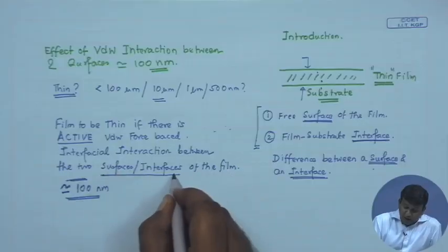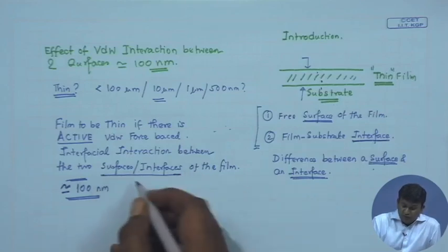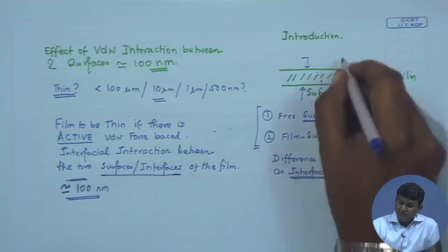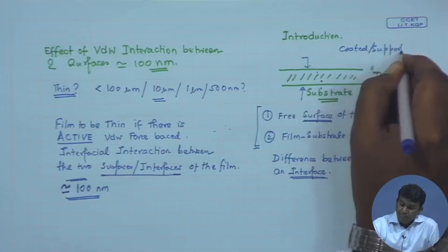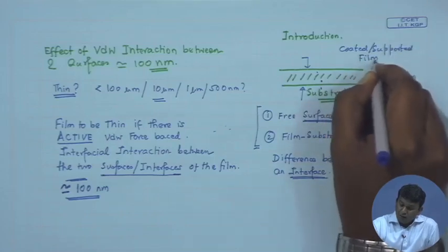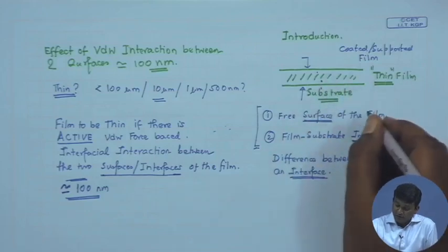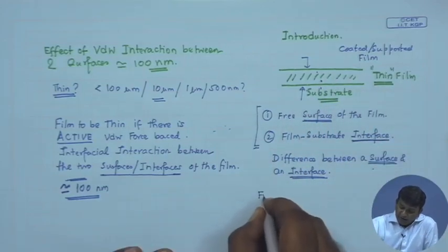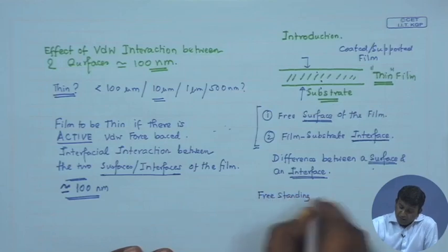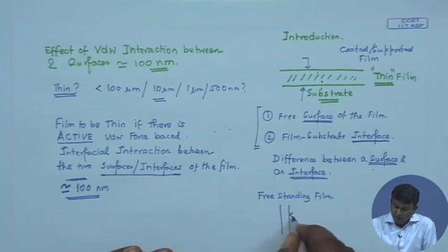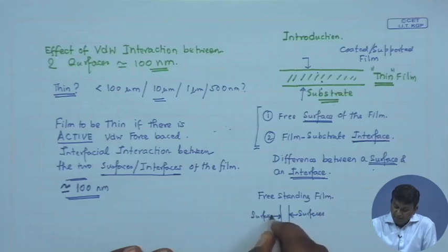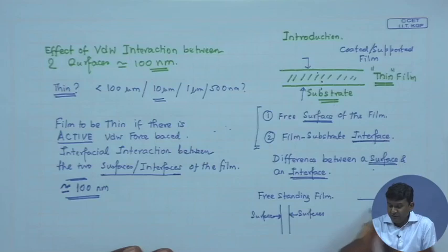One quick highlight: I mentioned 'between the two surfaces or interfaces' because a coated or supported thin film has one surface and one interface, as we discussed. But you can in principle have a free-standing film. A very simple example is the soap bubble — the outer periphery of a soap bubble. You can have a free-standing film with surfaces on both sides.